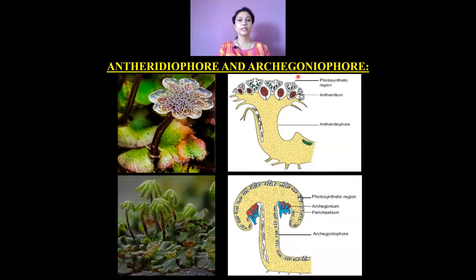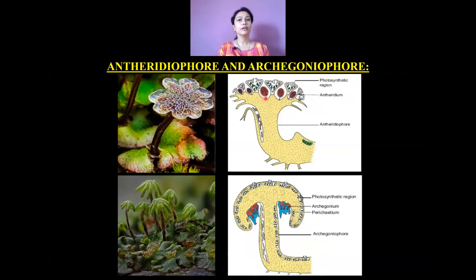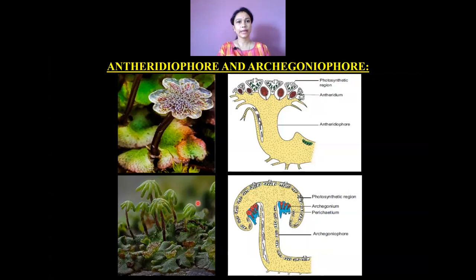Let us see the structure of the antheridophore and archegoniophore. If we cut a longitudinal section (LS) through the antheridophore, we see a structure with a stalk, photosynthetic filaments, and chambers within which the antheridia are produced — the male sex organs of Marchantia. If we cut a LS through the archegoniophore, we see the photosynthetic region, the female sex organs or archegonia enclosed within the perichaetum, and the stalk called the archegoniophore.